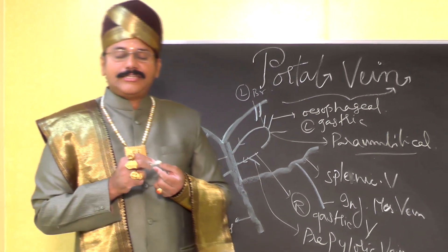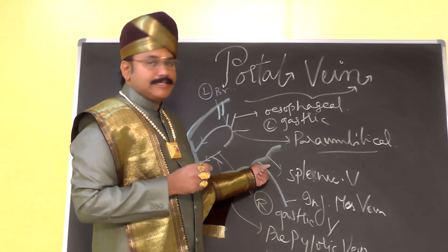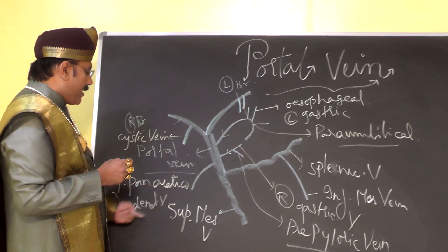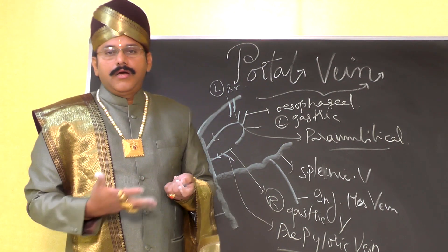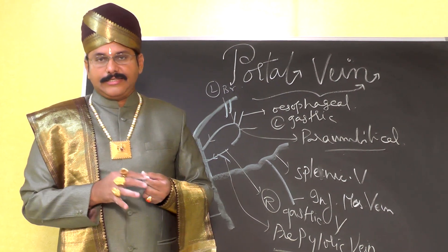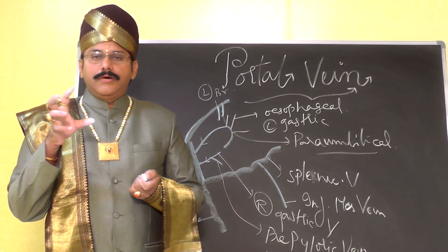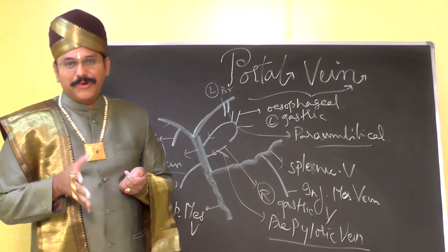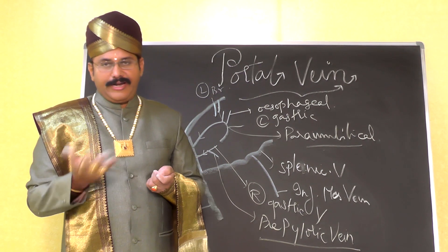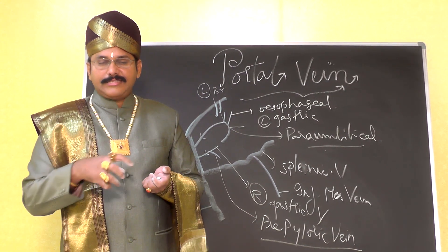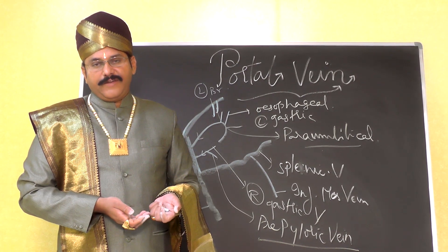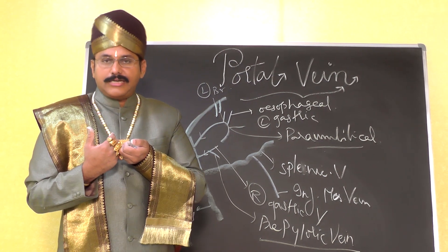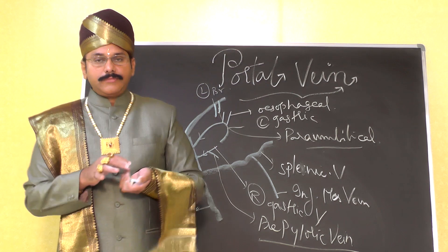The portal vein is draining the spleen via the splenic vein, the pancreas via the superior pancreaticoduodenal vein, and the lower part of the alimentary tract — the small intestine. The nutrients that are absorbed from the small intestine — carbohydrates, proteins, fats — are transported from the intestine into the liver via the portal vein.